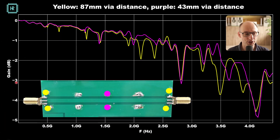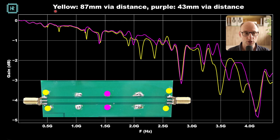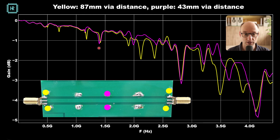This is the first measurement result. We see gain versus frequency for two different situations. In the first (yellow) situation, the yellow vias are placed, giving a distance of 87 millimeters. In the purple situation, the purple vias are added, giving a 43 millimeter distance. With the yellow vias only, we get a resonance at 700 megahertz. If we add the purple vias, that doubles to 1.4 gigahertz. Interesting — we halve the distance, we get double the frequency.